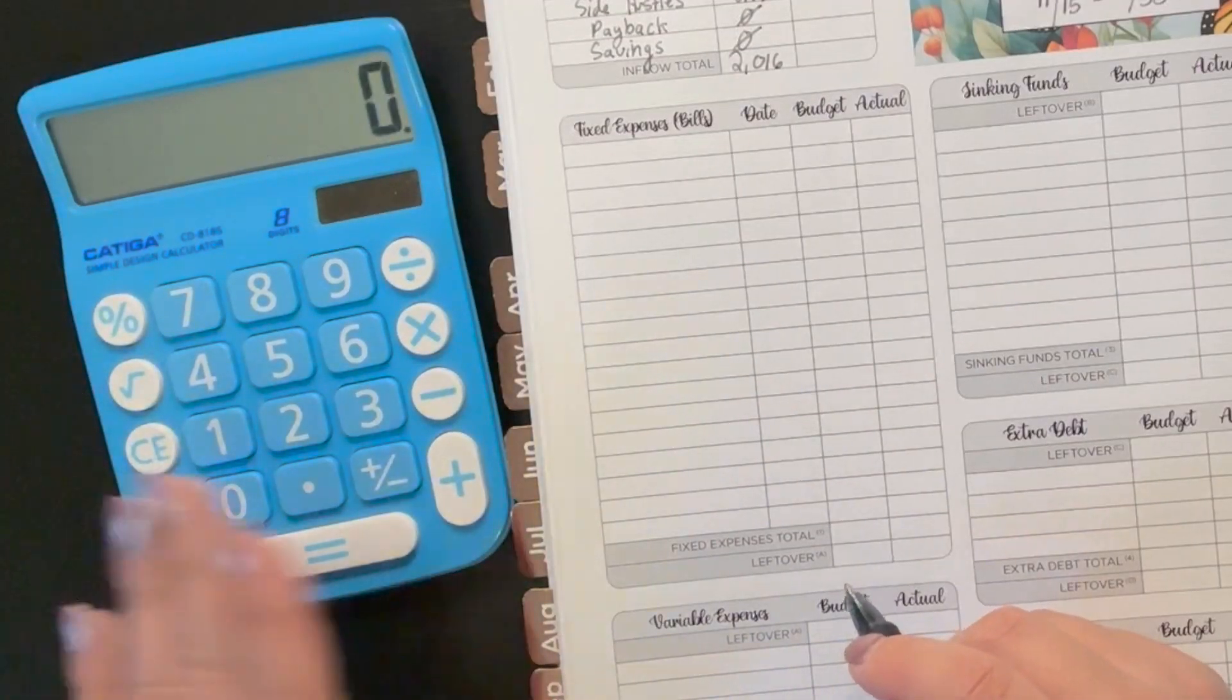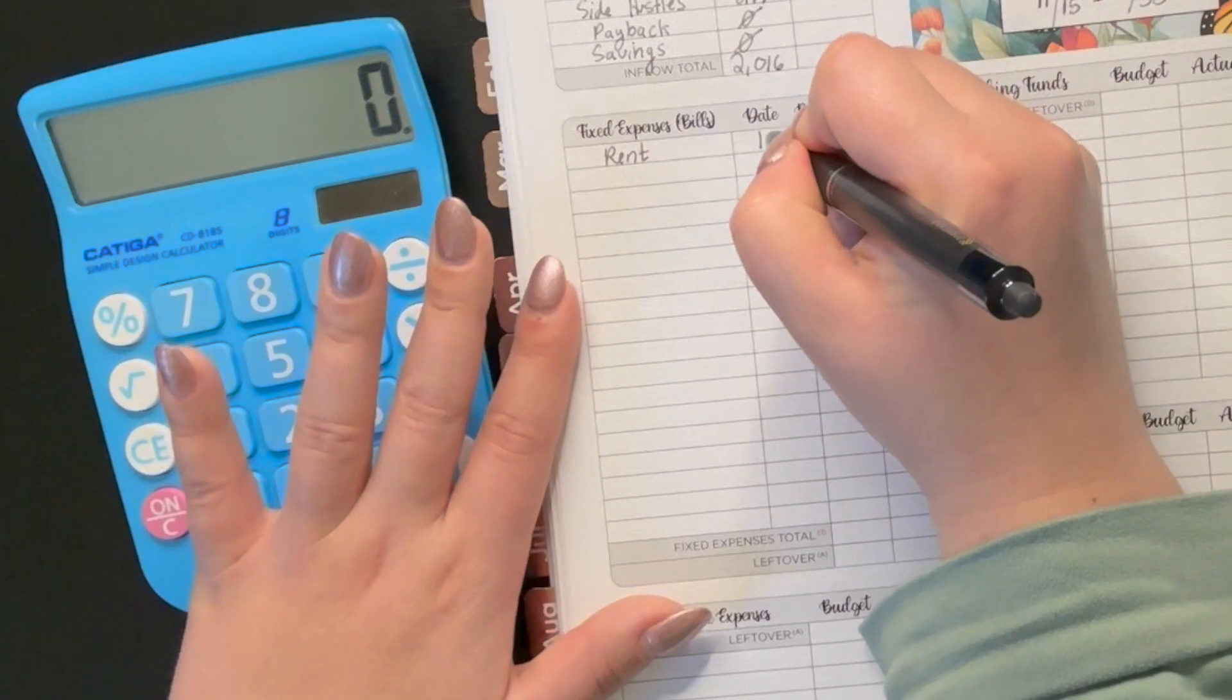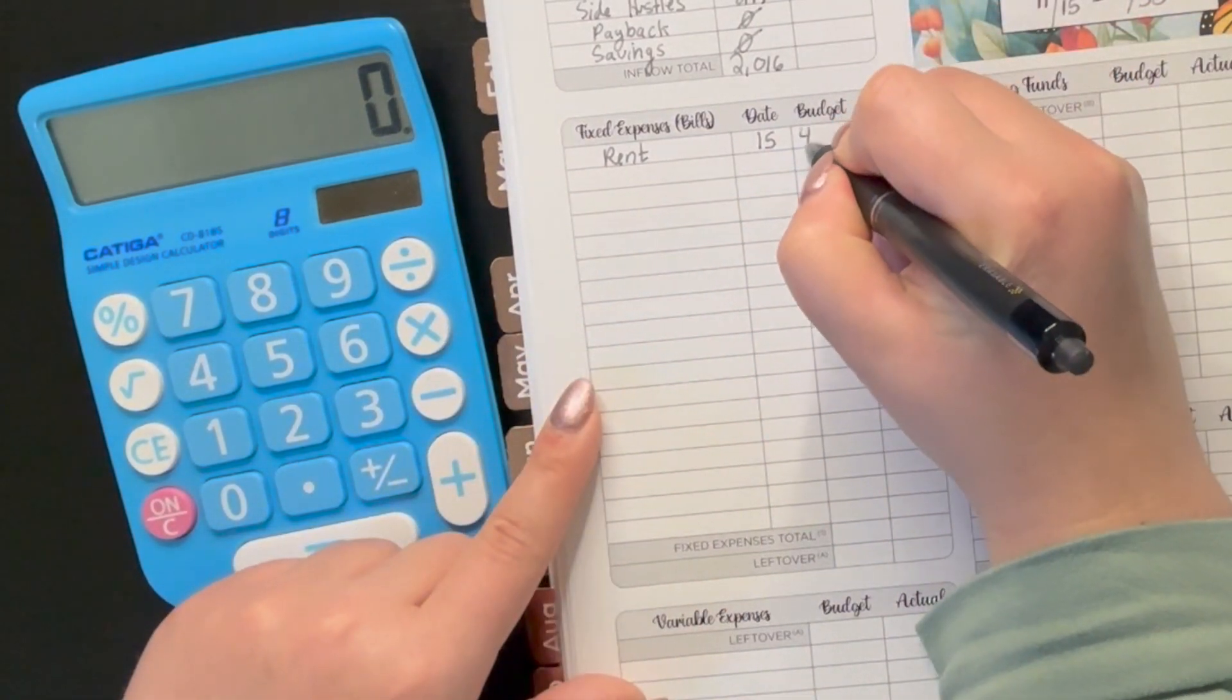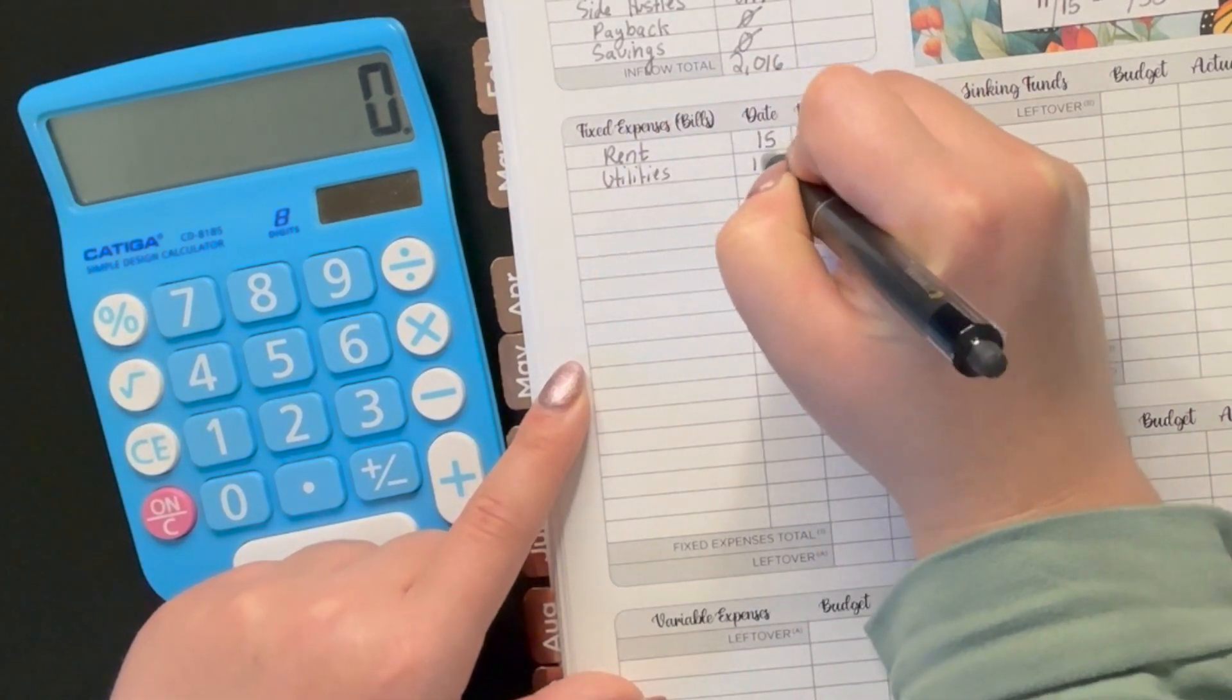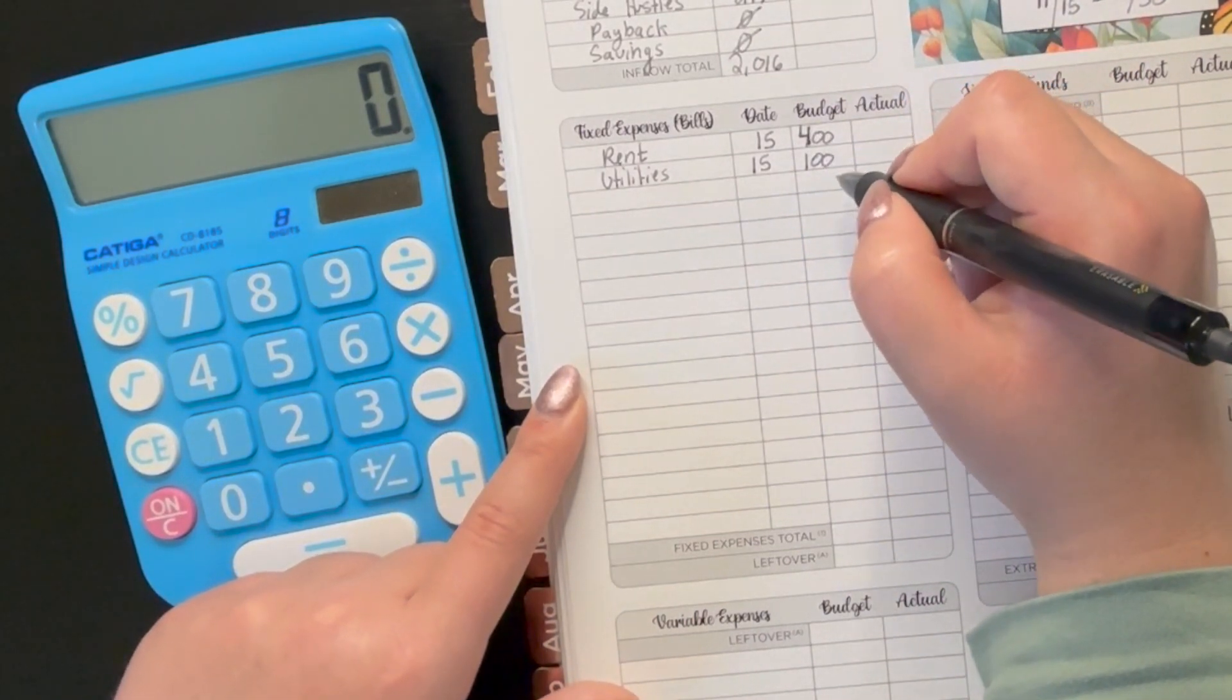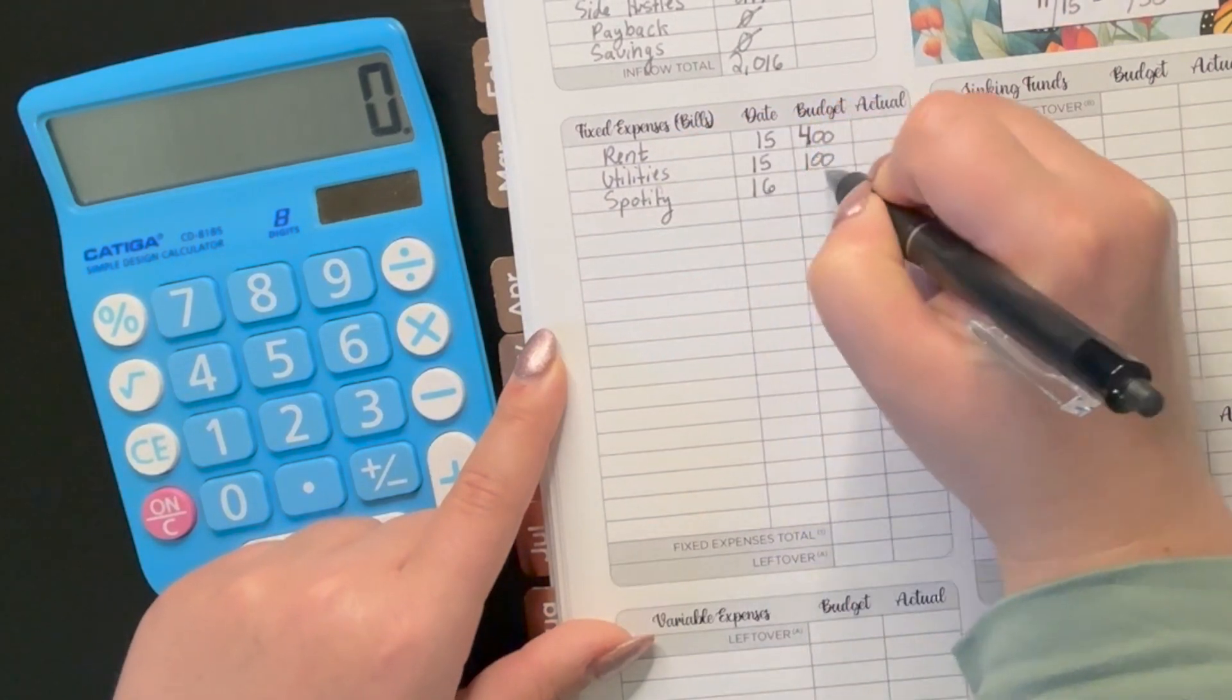Going to fixed expenses here, we have rent, which I do in half. Most of my fixed expenses I save for in half and it's been working out flawlessly for me. Well, knock on wood, not flawlessly, but pretty darn good. So that's due on the 15th, which is $400. And then we have Utilities also on the 15th, which is $100. I might reduce this amount going forward because I built myself a nice little buffer in the account. But I still kind of like saving for $100 just in case anything happens. We've got Spotify due on the 16th, which is $11.